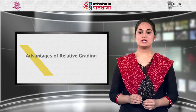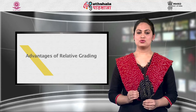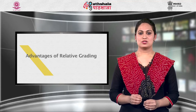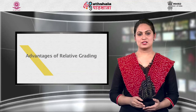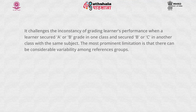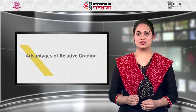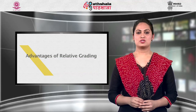Along with advantages, the limitations of relative grading are: this system does not give information to students, teachers, and parents about exactly what the learner has mastered and how much. It challenges inconsistency when a learner secures an A or B grade in one class but a B or C in another with the same subject. The most prominent limitation is that there can be considerable variability among reference groups — some classes will be relatively high achievers and some relatively low achievers.